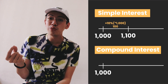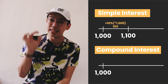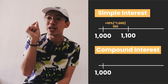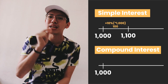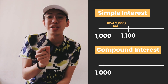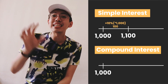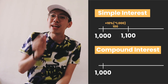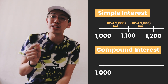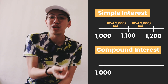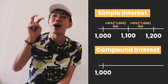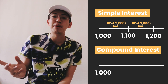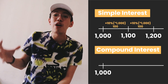For simple interest: suppose you have 1,000 rupiah and get 10% interest. In the next period you get 1,000 plus interest of 10% × 1,000 = 100, giving 1,100. In the second year, interest is still calculated from the principal of 1,000, so interest is again 100, and your money becomes 1,200. This is simple interest — the interest is always calculated from the principal.